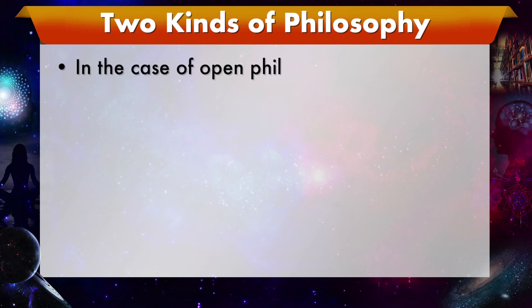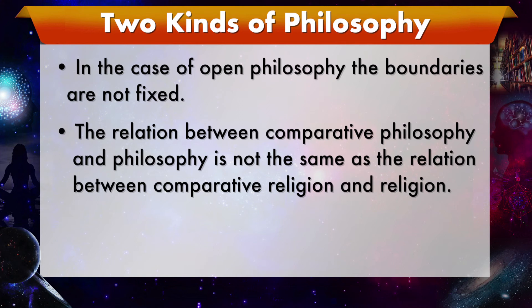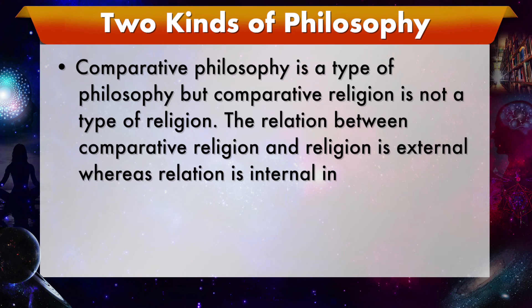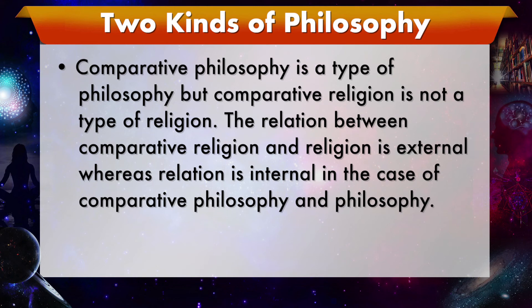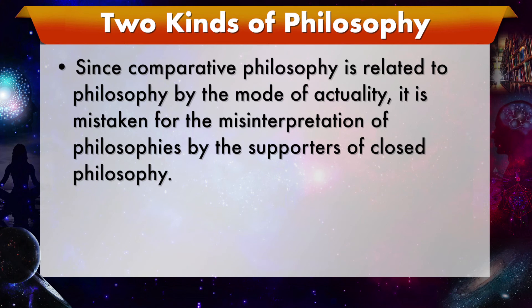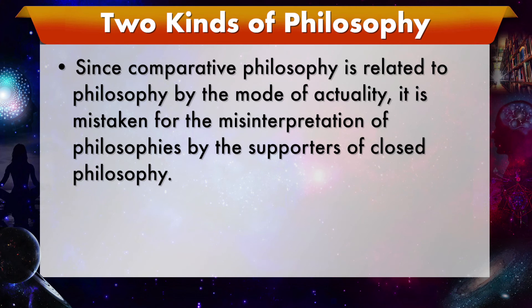In the case of open philosophy, the boundaries are not fixed. The relation between comparative philosophy and philosophy is not the same as the relation between comparative religion and religion. Comparative philosophy is a type of philosophy, but comparative religion is not a type of religion. The relation between comparative religion and religion is external, whereas the relation is internal in the case of comparative philosophy and philosophy. Due to the internality of this relation, comparative philosophy is related to philosophy by the mode of actuality, whereas comparative religion is related to religion by the mode of possibility. Since comparative philosophy is related to philosophy by the mode of actuality, it is mistaken for the misinterpretation of philosophies by the supporters of closed philosophy.